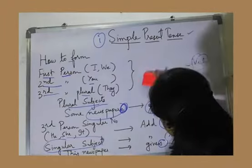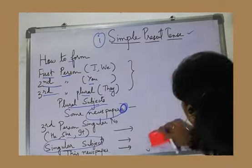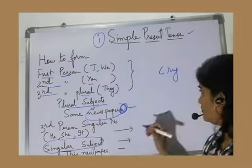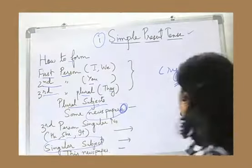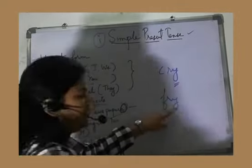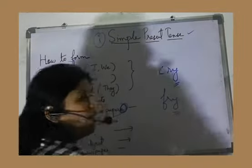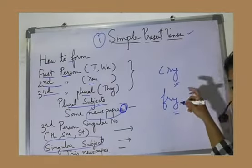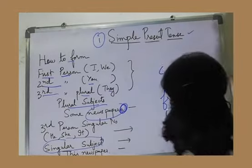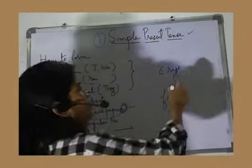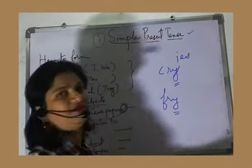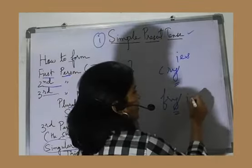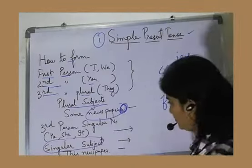Pick some verbs. Example: cry. At the end of the verb, Y is there. Fry. At the end of the verb, the letter Y is there. So when we add S or ES with such kind of verbs, what do we do? We remove Y, then we add IES. Here, remove Y, IES.